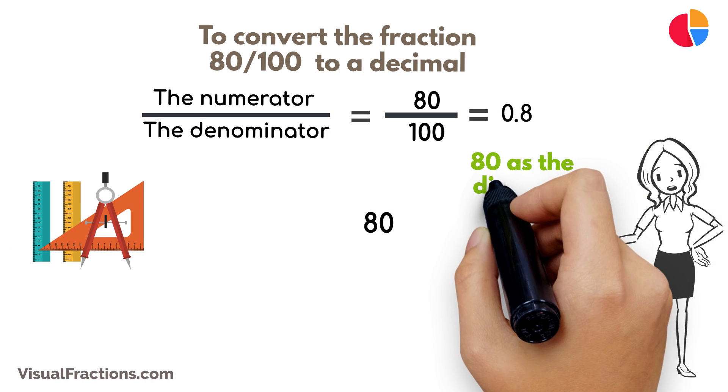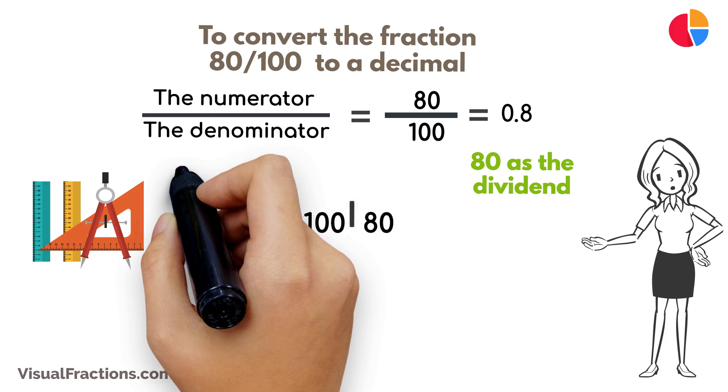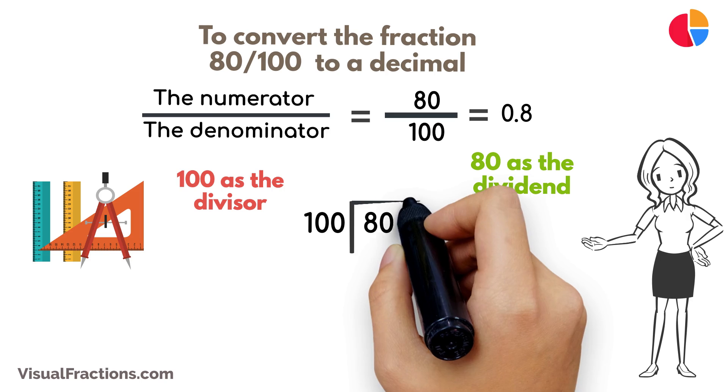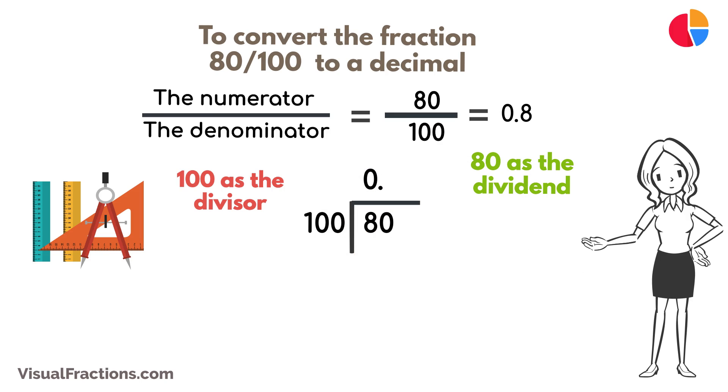we start by writing 80 as the dividend and 100 as the divisor. Since 100 doesn't fit into 80, we add a decimal point in our answer and append a 0 to 80, making it 800.